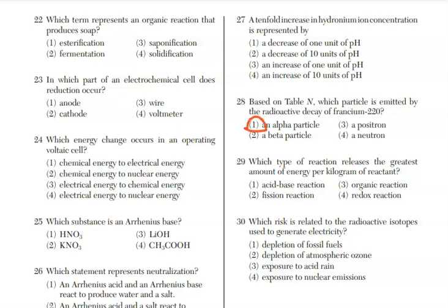For 29, which type of reaction releases the greatest amount of energy per kilogram of reactant? By far, it is going to be a nuclear reaction, either fusion or fission. In this case, it's fission.